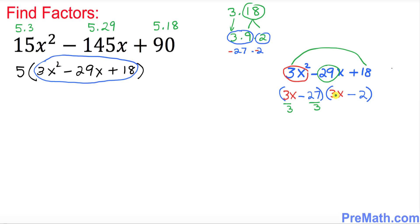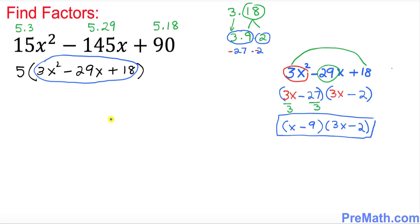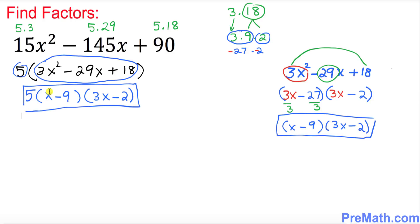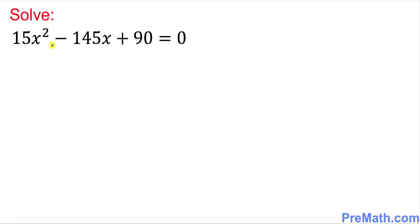3 is the GCF that divides into both. In the second parenthesis, there's nothing common, so leave it alone. Simplifying: 3 divided by 3 is 1x, and 27 divided by 3 is 9, giving us (x minus 9) and (3x minus 2). So the complete factors are 5 times (x minus 9) times (3x minus 2).